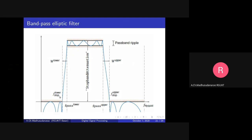If you want to modify FS1, the only option is to increase FS1. If you want to modify FS2, you can decrease FS2 — that gives a narrower transition band, which is good. We should not increase FS2 and we should not decrease FS1 — that would be the wrong direction. We can increase FS1 or decrease FS2, but we should not do it the other way around.